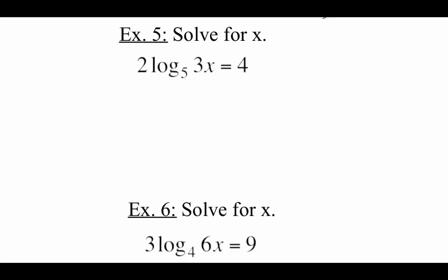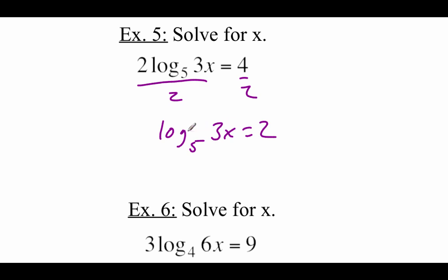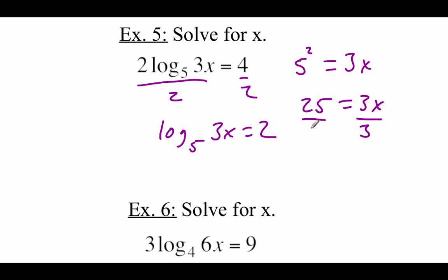These next examples are going to be very similar to those last ones, but notice we're working with different bases. This first one is a base 5 logarithm. We're still going to treat them the same — we're trying to get that x all by itself. First thing I see happening here is this 2 on the outside, so we're going to divide both sides by 2. We get log base 5 of 3x equals 2. Now in order to get rid of this logarithm, we rewrite it: this has a base of 5, so it's going to go 5 squared equals 3x. Well 5 squared is just 25, so 25 equals 3x. Divide by 3 on both sides and we get x equals 25 thirds.